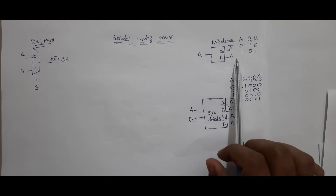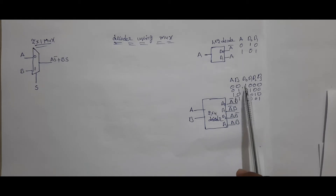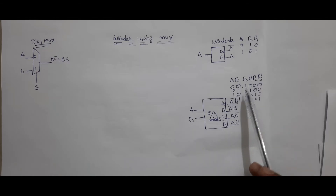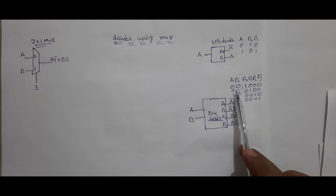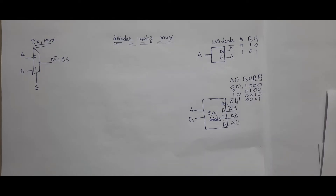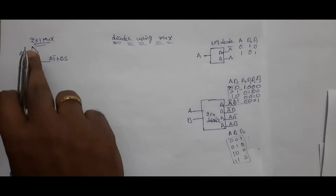Now for the 2x4 decoder: A, B inputs are 00, 01, 10, 11. If A is 00, D-naught is selected; if 01, D-one is selected; 10 means D-two is selected; 11 means D-three is selected. Doing a K-map: D-naught is A-bar B-bar, D-one is A-bar B, D-two is A B-bar, D-three is A B.